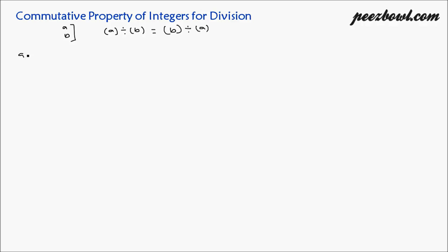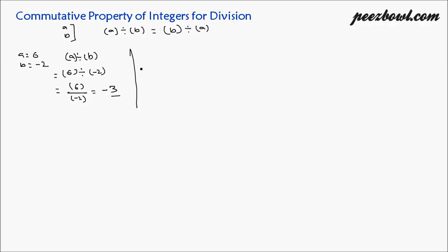For A, let us place 6, and for B, we put minus 2. We need to find A divided by B first — that is 6 divided by minus 2, which equals minus 3. Now on the right hand side, replacing B and A with minus 2 and 6, we get minus 2 upon 6, which equals minus 1 upon 3. Since minus 3 is not equal to minus 1 upon 3, the commutative property of integers for division is not true.